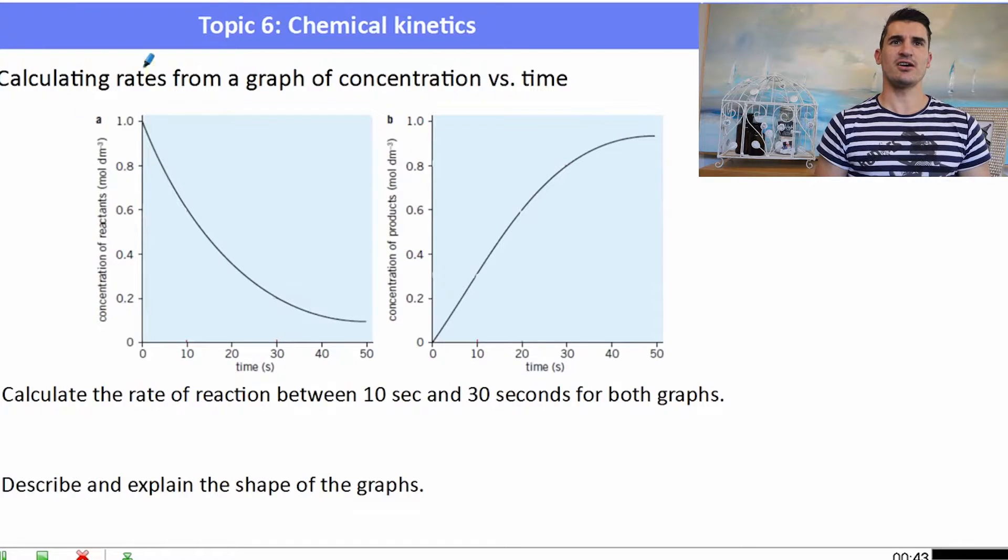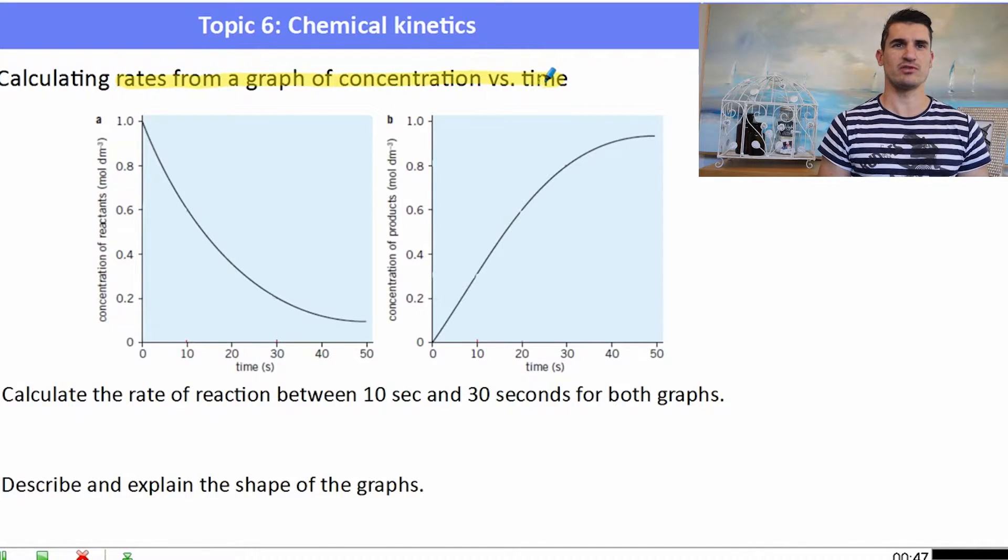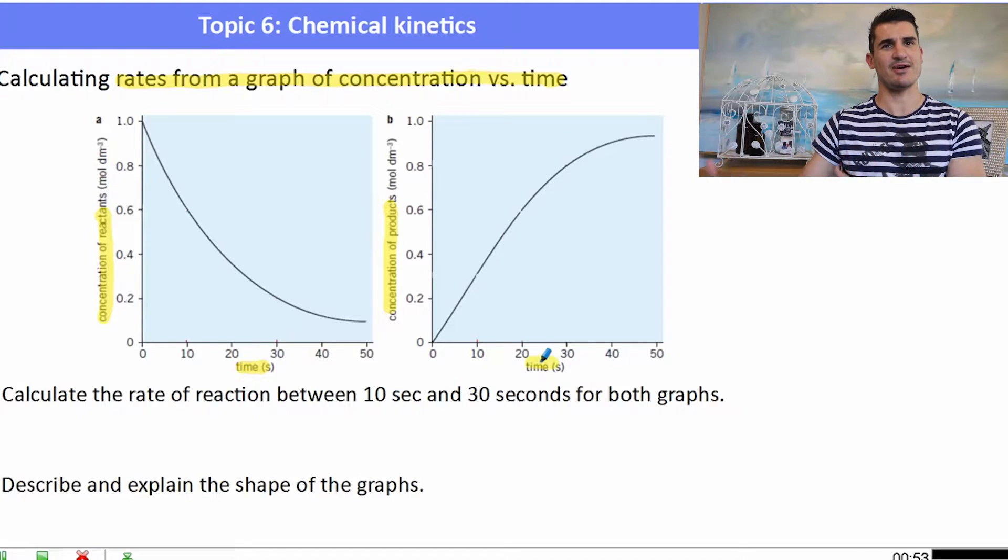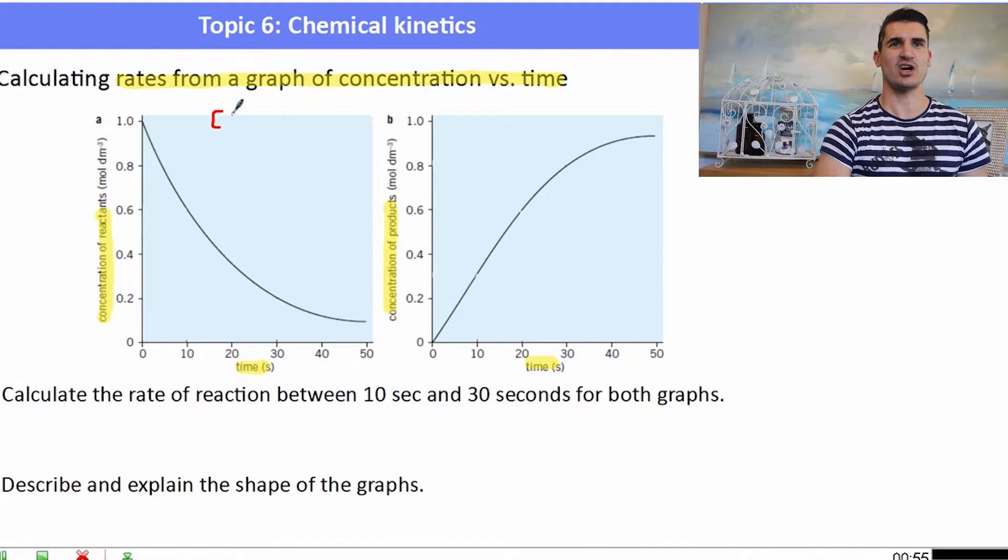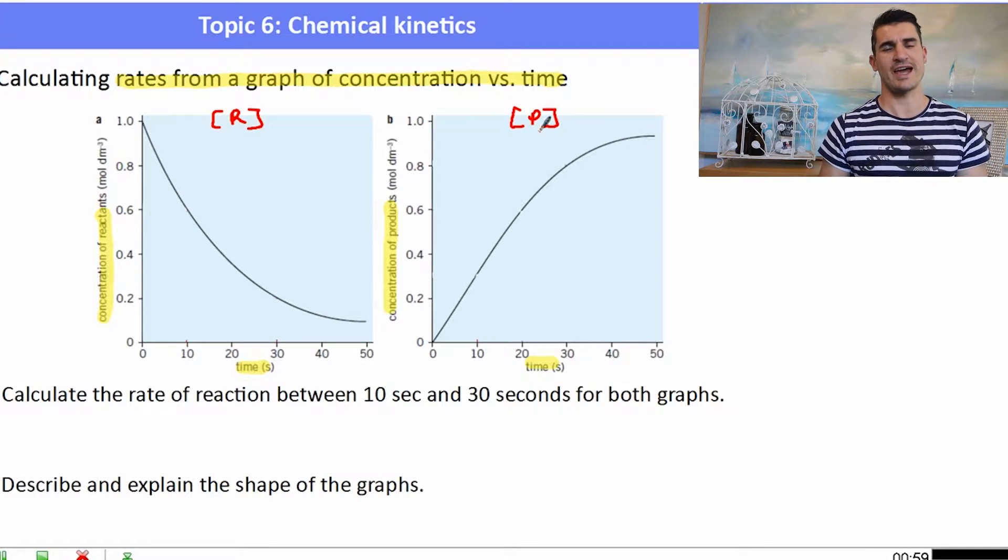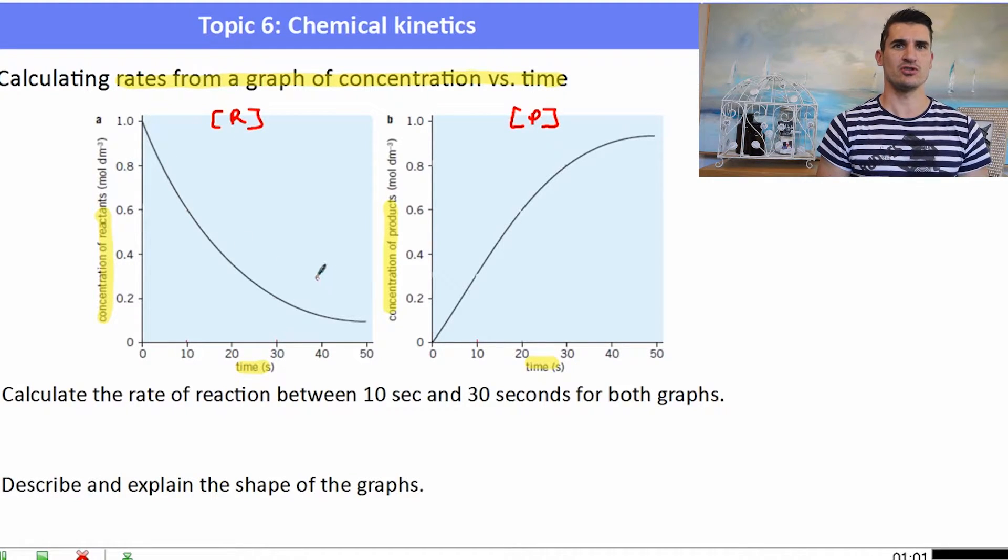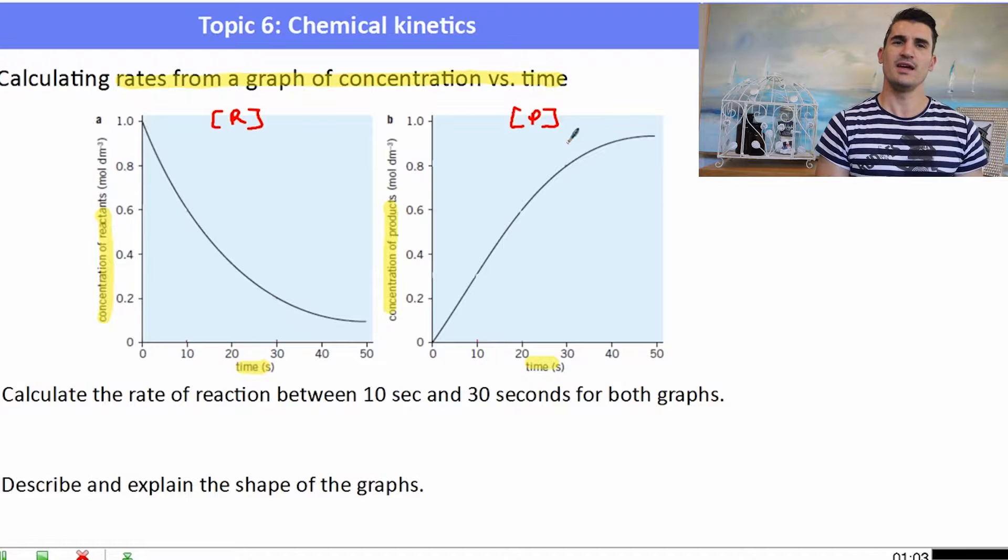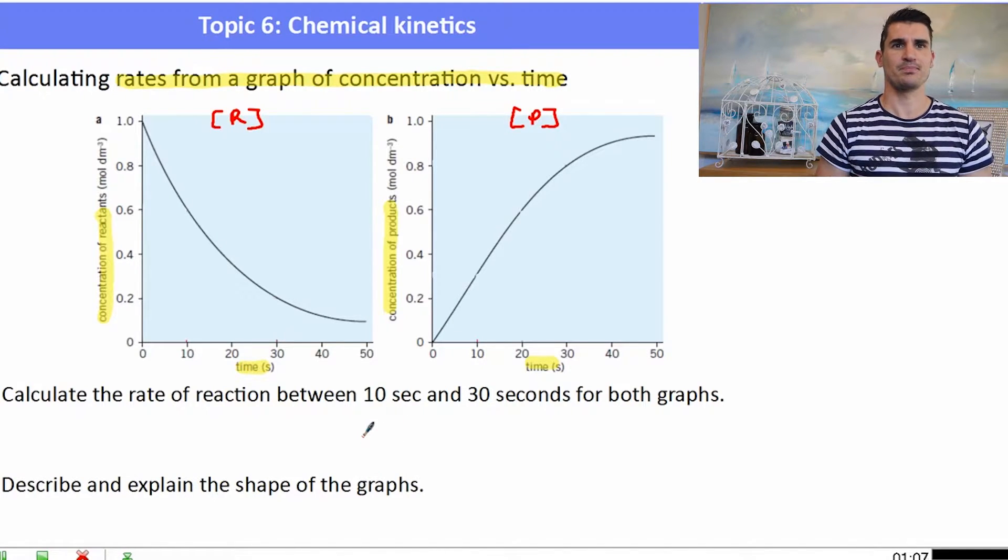So let's first have a look at calculating the rates of reaction from a graph of concentration versus time. If you have a look on the left-hand side, or the y-axis, we've got our concentrations and our x-axis contains our time in seconds. The one on the left is the concentration of reactants. The one on the right is the concentration of products. And we can see that the reactants goes down and the products goes up. So the question is, calculate the rate of reaction between 10 and 30 seconds for both graphs.